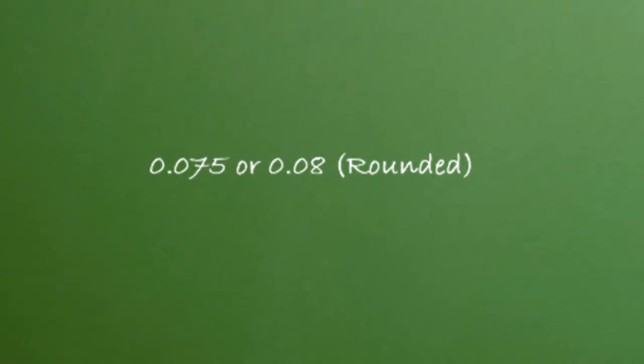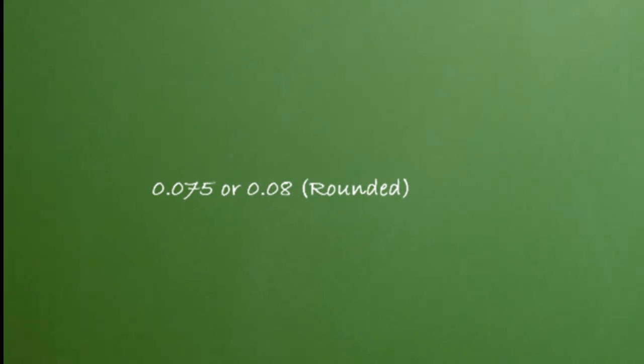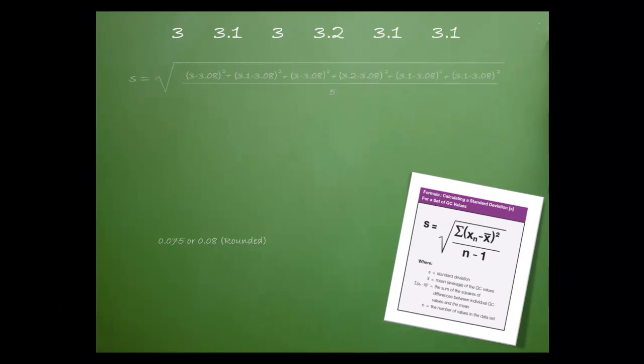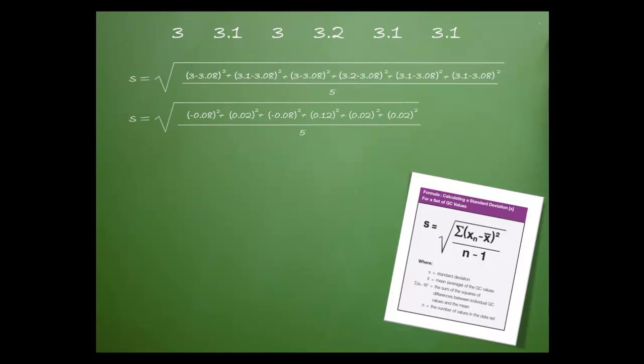The standard deviation is .075 or .08 when rounded. Here's how I got that figure. First, I entered all the values into the formula. Then I completed the subtraction for each of the terms. The values were then squared and added. The division occurs and the square root is taken. The standard deviation is .075 or .08 when rounded.